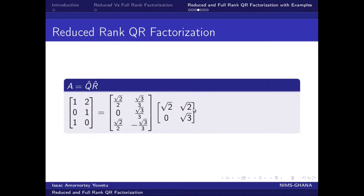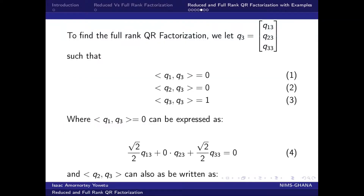We then go ahead to find the full rank QR factorization. To obtain it, we suppose our Q3 is a vector with elements Q13, Q23, and Q33. For vectors to be orthogonal, the dot product between them should be zero. So the inner product of Q1 and Q3 is zero, the inner product of Q2 and Q3 is also zero, and the inner product of Q3 and Q3 should equal one.